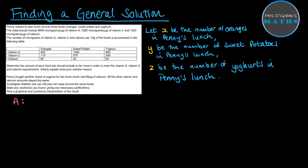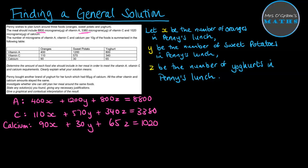When looking at vitamin A, however many oranges we've got, we'll have 400 micrograms per orange, so we'll do 400 times x. For the sweet potatoes, we'll have 1200 per sweet potato, so we'll do 1200 times the number of sweet potatoes, and then for yogurts, it's 800 times the number of yogurts, and we want that total to come to the 8800 that was specified at the beginning. For vitamin C, if we go through and do a similar thing, it'll be 110x, 570y, 340z equals the total of 3380, and then our third equation made from the calcium.